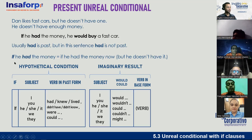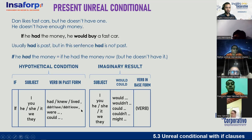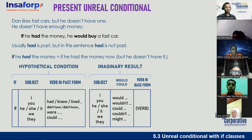So here's a quick explanation of the structure. There's a hypothetical condition and an imaginary result. The hypothetical condition uses 'if' + subject + verb in past (affirmative or negative). The imaginary result includes subject + 'would' or 'could' + verb in base form. Going back to the example: 'If he had the money, he would buy a fast car.' My question is: does he have the money?